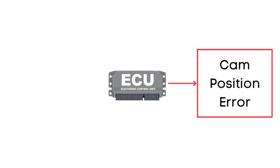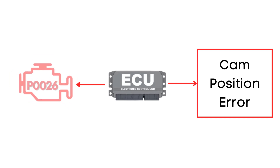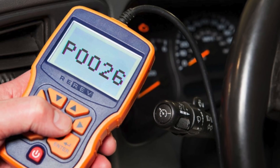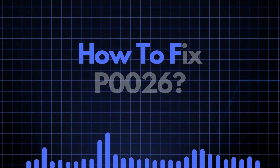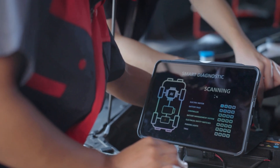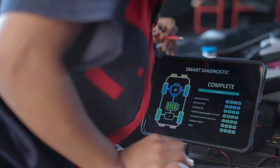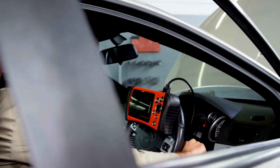If the ECU detects that the camshaft's advance or delay is taking too long, or if it simply can't reach the desired camshaft position, it's going to raise a red flag. That's when the P0026 code gets triggered. Now that we know what P0026 means, let's find out how to fix it. Troubleshooting P0026 involves several steps, and we'll discuss each one in detail.